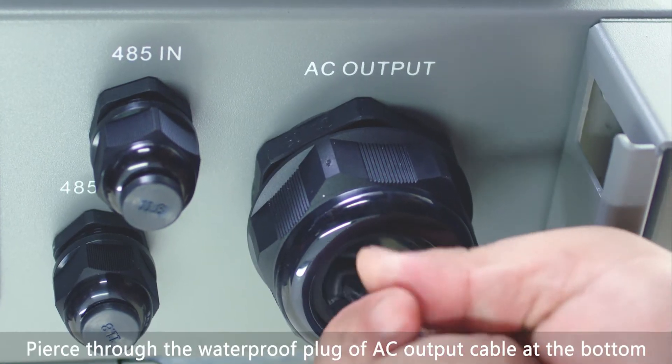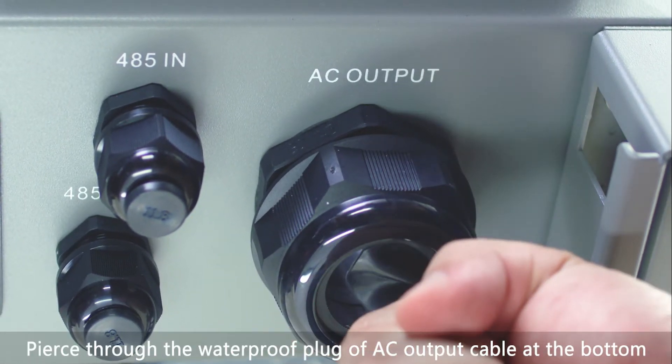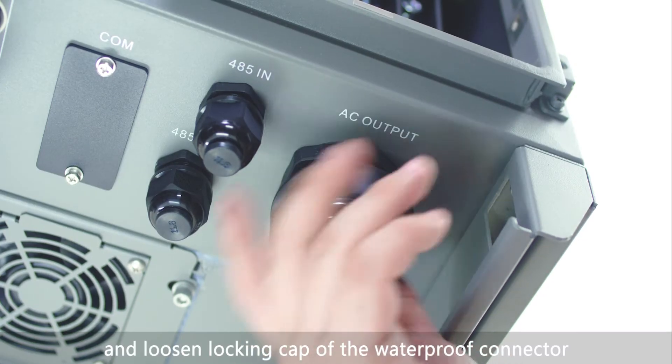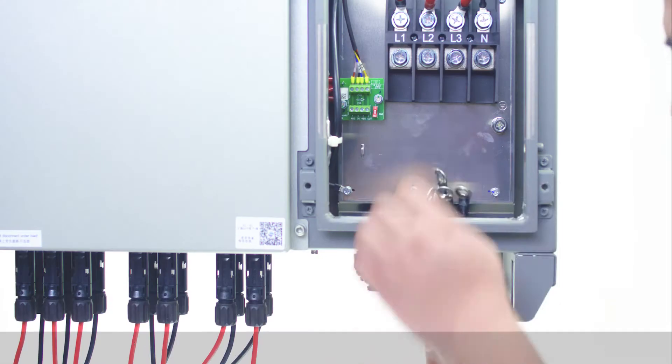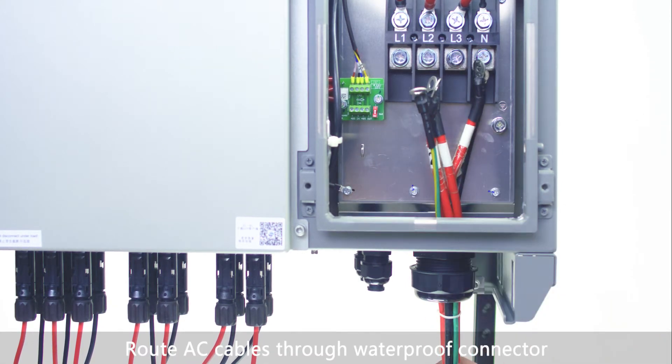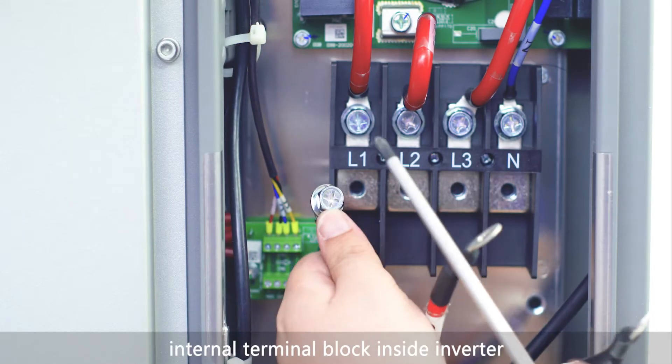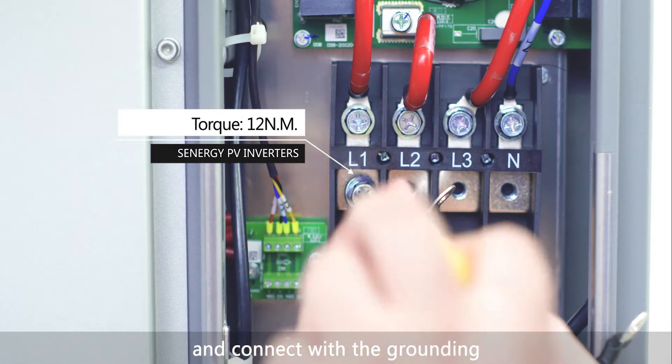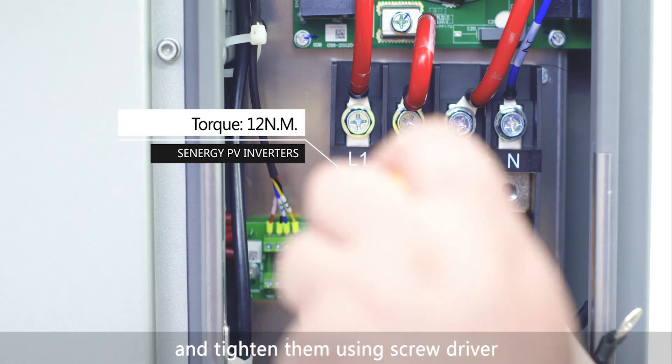Pierce through the waterproof plug of AC output cable at the bottom of inverter using edge tool and loosen locking cap of the waterproof connector. Route AC cables through waterproof connector. Connect the AC cable to the internal terminal block inside inverter and connect with the grounding, and tighten them using screwdriver.